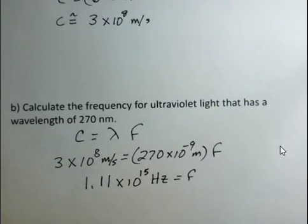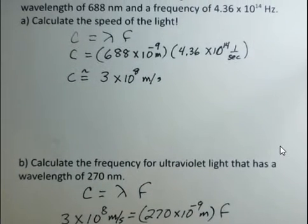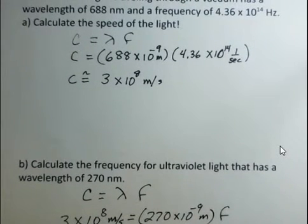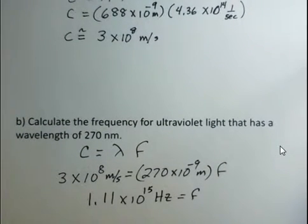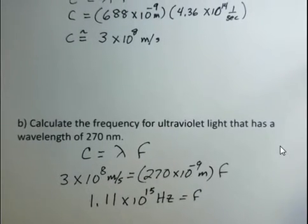Is that a reasonable frequency for ultraviolet light? Up here we had the frequency for red light, 4.36 times 10 to the 14th hertz. Now we're getting 1.11 times 10 to the 15th hertz. Yes, it's reasonable. Ultraviolet light is more energetic. It has a higher frequency than red light.